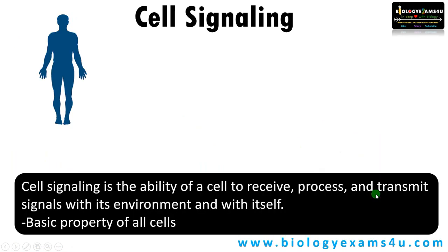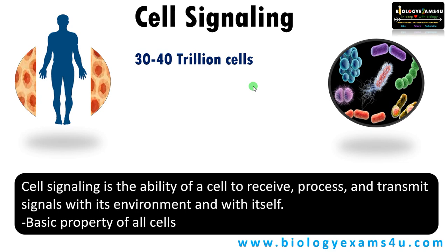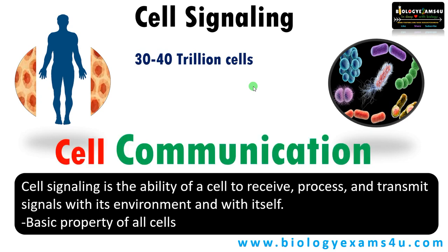Now let us define cell signaling. We are made up of 30 to 40 trillion cells. To keep us as a sophisticated, elegantly designed multicellular organism, the cells must communicate. Even in the case of unicellular organisms like bacteria, they must communicate with the environment and also with other microbes or bacteria. So cell signaling simply means cell communication — it is the ability of a cell to receive, process, and transmit signals with its environment and with itself. It's a basic property of cells essential for survival of an organism.